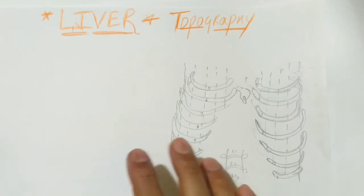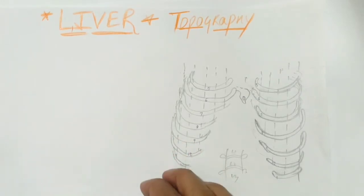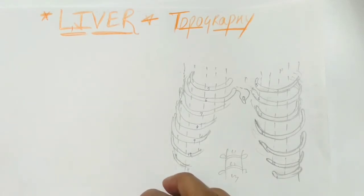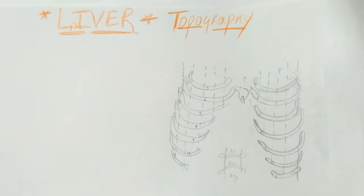In the next video we will be discussing the external structure of our liver — what are the parts, what are the surfaces, what are the ligaments of the liver. In this video we are going to discuss topography. Topography is with respect to organs, with respect to the skeleton, and with respect to your abdominal region. The organs which lie in the abdominal cavity have a specific topography called holotopy. There are three topographies which we will be discussing in this video.